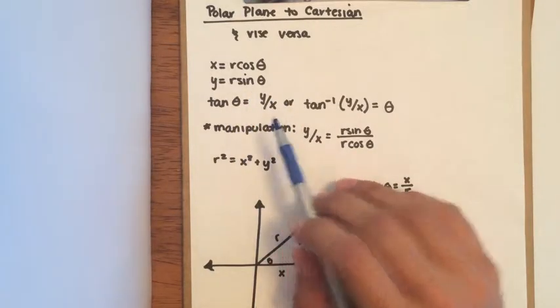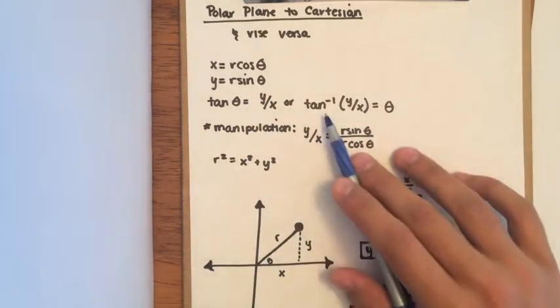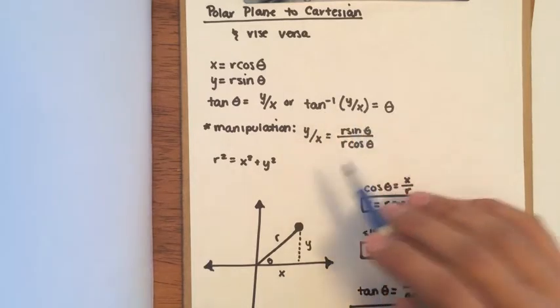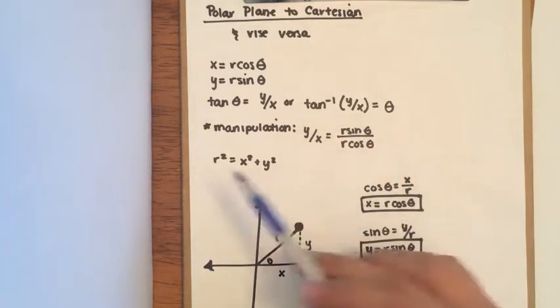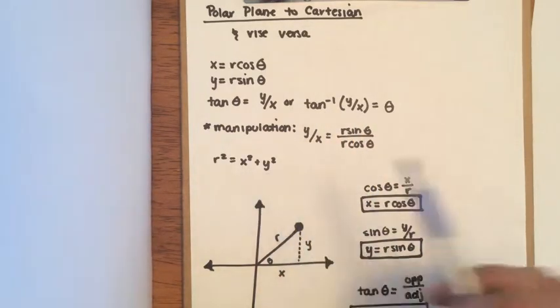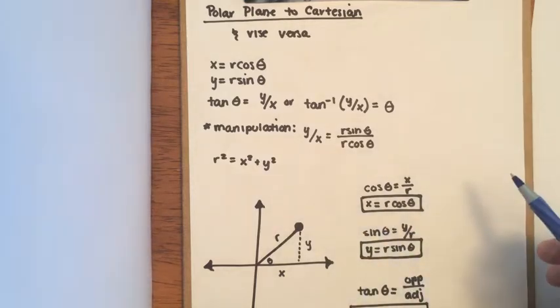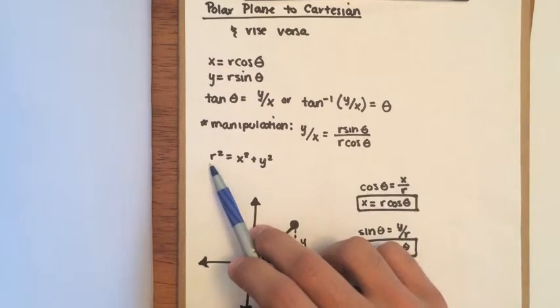tan θ equals y over x, or another way of saying that is inverse tangent of y over x equals θ. And then you have r² equals x² plus y². All these can be derived using basic trig and Pythagorean theorem.